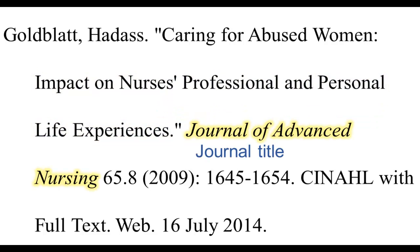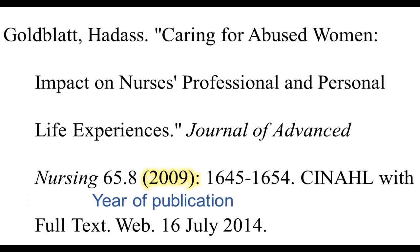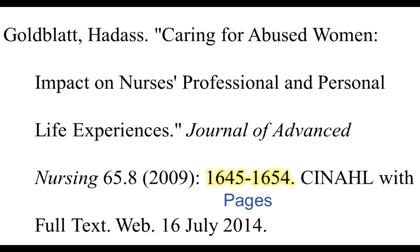After the article title comes the journal title. This should be in italics, and you should follow the same capitalization rules as the article title. You do not use a period after the journal title. Instead, you list the volume number, place a decimal point, and then without a space, the issue number. Then place the publication year in parentheses, follow the parentheses with a colon, and then the article page numbers. You place a period after the article page numbers.